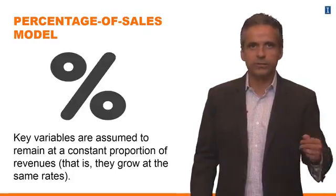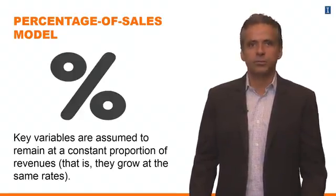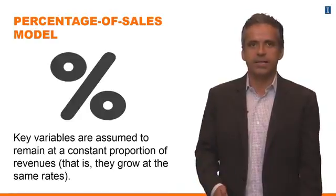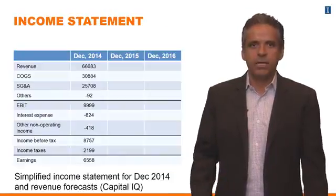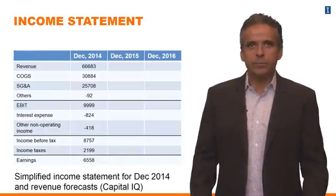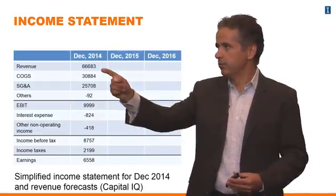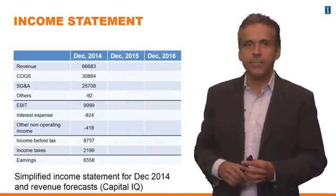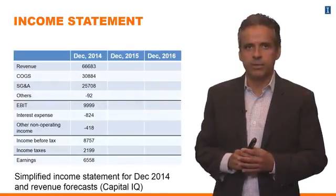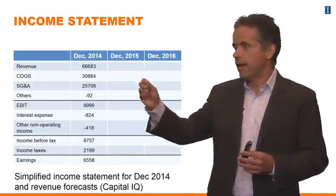It works better in some situations than others, but it's going to allow us to illustrate what it takes to forecast a financial statement — in this case, the income statement. So this is the income statement for PepsiCo. We're going to start with December 2014 financial statements — the audited numbers that PepsiCo reported at the end of the fiscal year in 2014.